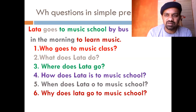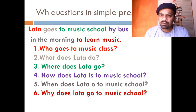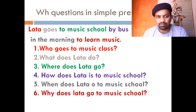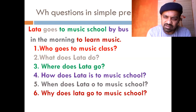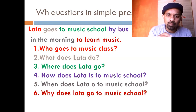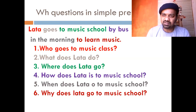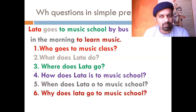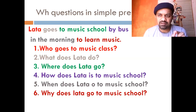To get 'Latha' as an answer, ask: 'Who goes to music class?' — the answer is 'Latha.' To ask about the verb 'goes': 'What does Latha do?' — 'Latha goes.' To get 'music class' as an answer, ask: 'Where does Latha go?' — 'Latha goes to music class.' Every time you ask a question, answer it not in short but in a full sentence — that will be better practice for you. 'Where does Latha go?' — 'Latha goes to music school.'